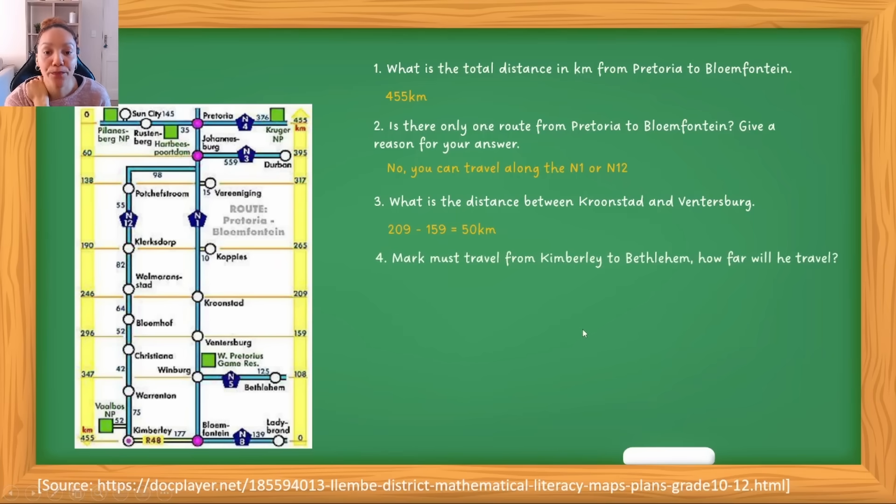Whenever you're calculating the distance between two dots that are parallel to the distances on the right, you always take the larger value and subtract the smaller value. Number four: Mark must travel from Kimberley to Bethlehem. How far will he travel? Again, we have to give the distance between Kimberley and Bethlehem. Pause this video and see if you can find it. My answer would be first find Kimberley, so here's Kimberley. We need to find Bethlehem, which is over there.